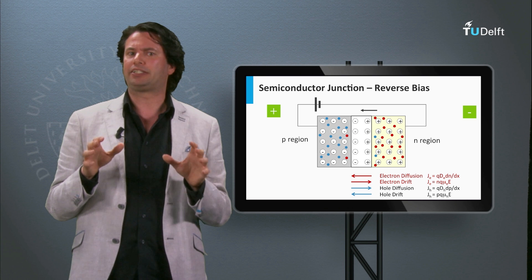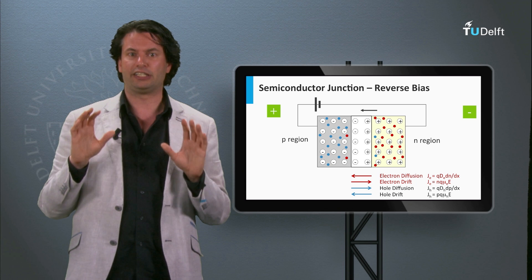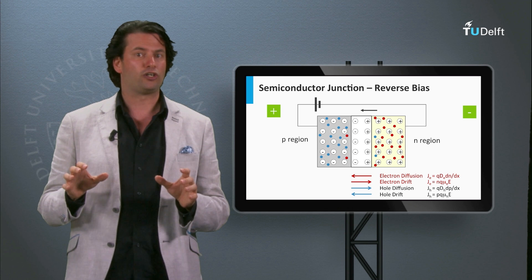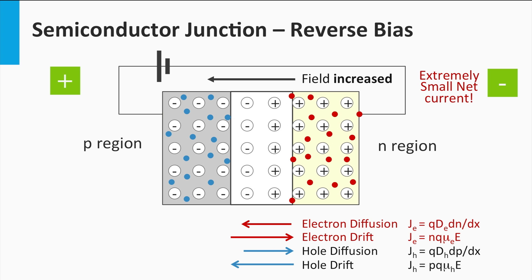We can do the opposite of forward biasing as well. We can apply a reverse bias over the p-n junction, which is still in the dark. The voltage at the contact of the p-doped side is negative and the voltage at the contact of the n-doped side is positive. The built-in electric field indicated by the black arrow and the applied electric field across the depletion zone indicated by the green arrow are now pointing in the same direction. The total electric field over the depletion zone is increased, and as a result, the width of the depletion zone becomes much wider — in other words, dx is getting larger.